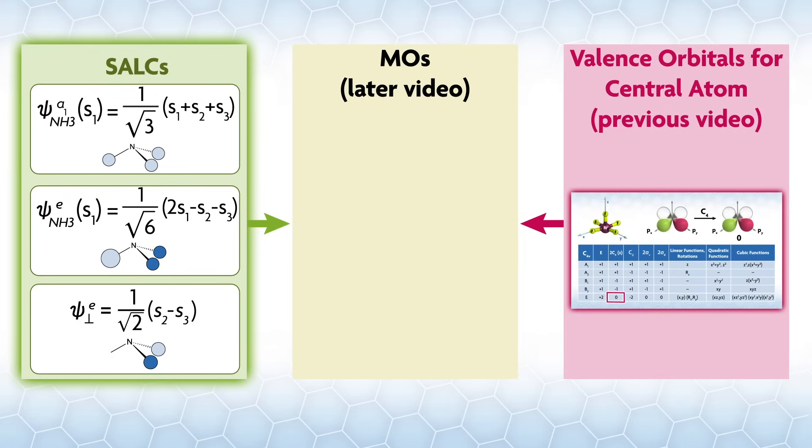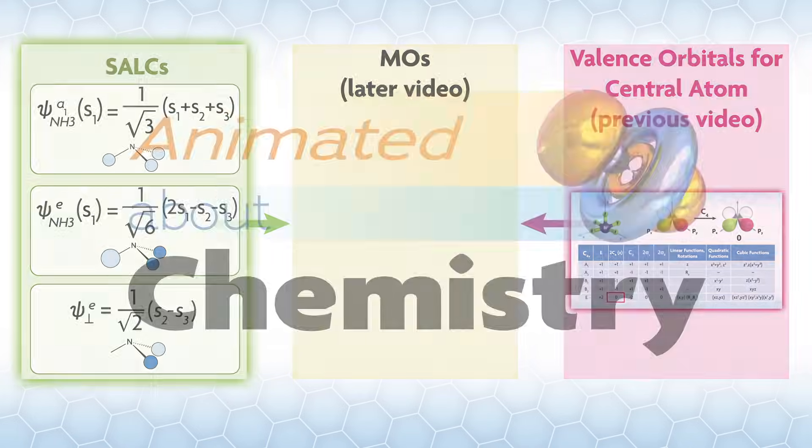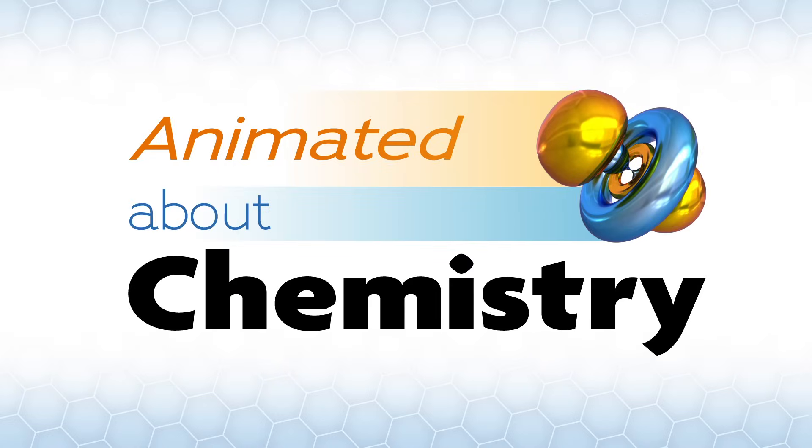Now, we have discussed both sides of the MO diagram. In the next videos in the series, we will do some additional examples of these SALC generations and orthogonalizations, and we will discuss orbital mixing and MO generation. If you enjoyed this video and want to support future videos covering topics like this one, please subscribe to our channel and give us a thumbs up. We make these videos for fun and as a way of interacting with and giving back to the community, so we greatly appreciate your support.